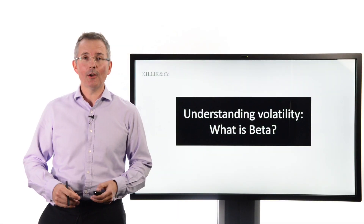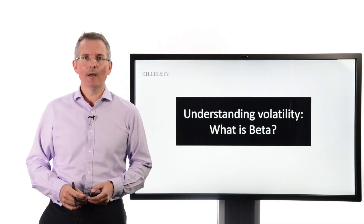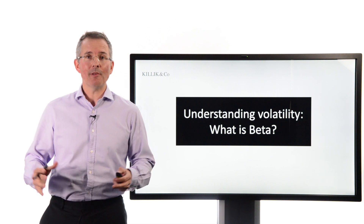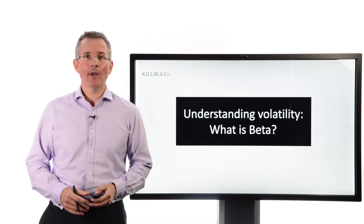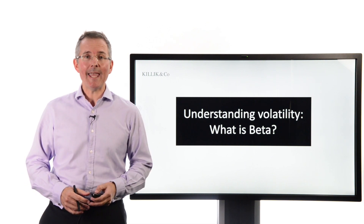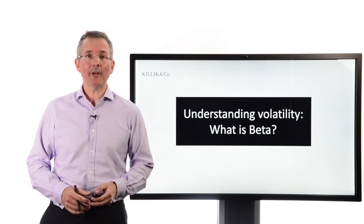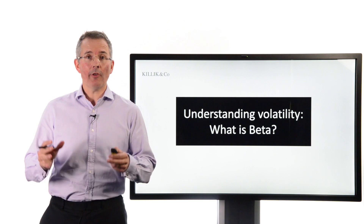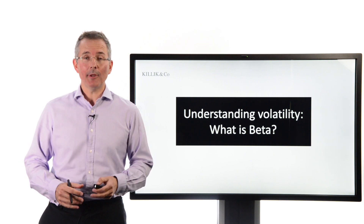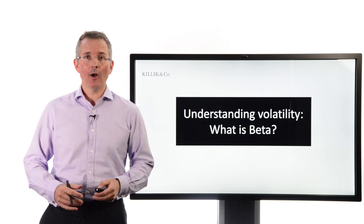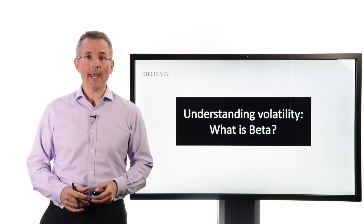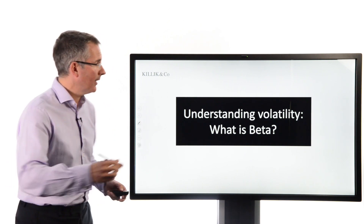In this short video, we're going to look at a measure that pops up on research reports and is mentioned in the press quite a bit, and that's beta. It's a way of measuring volatility. It's not the only way, but in this short video, I want to concentrate on this one.